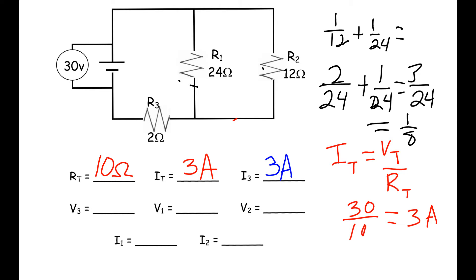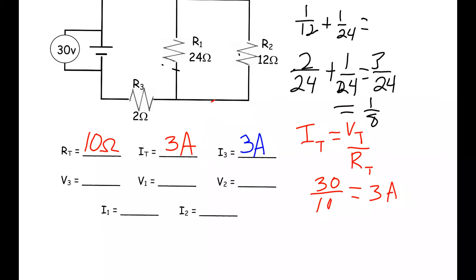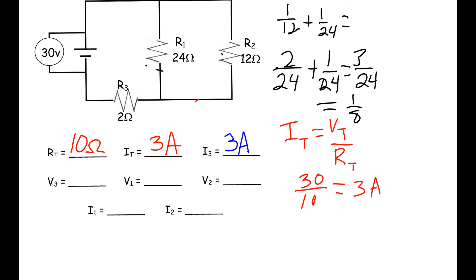Then we're going to find our V3. Our V3 is going to be equal to I3 times R3. So that would be 3 times 2.